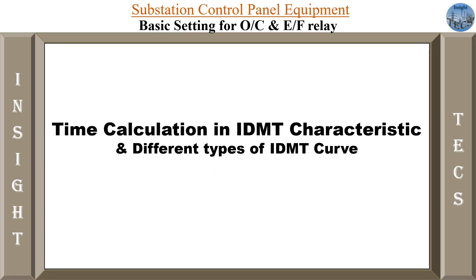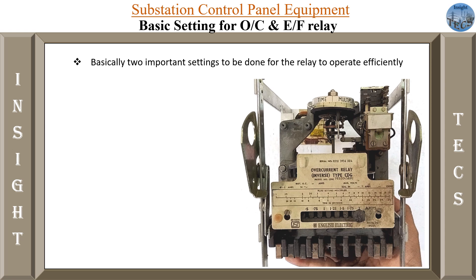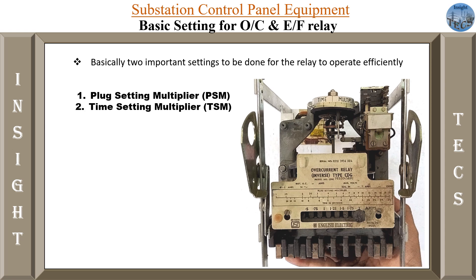Continuing in our IDMT characteristics and different types of operating relay settings, today we are going to learn about time calculation in IDMT characteristics and how different types of IDMT curves are made. We have seen in our previous video that for electromagnetic type of relay, there are basically two main settings that are done — one is the plug setting and the other is the time setting.